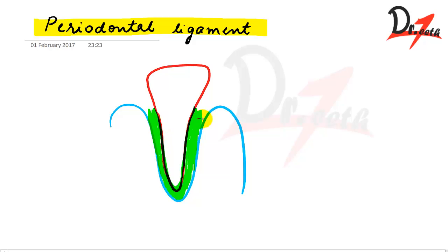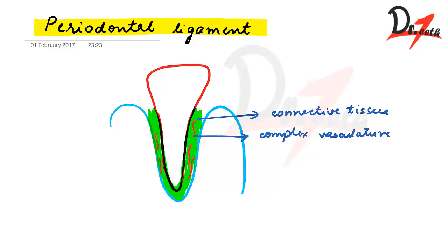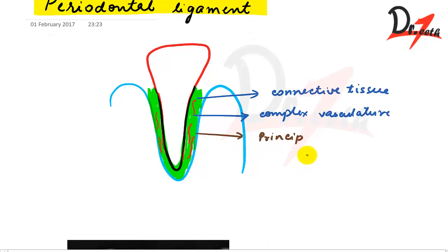The periodontal ligament is a highly cellular connective tissue with complex vasculature — it has blood vessels as well. The most important element of the periodontal ligament is the principal fibers, which run throughout the ligament.